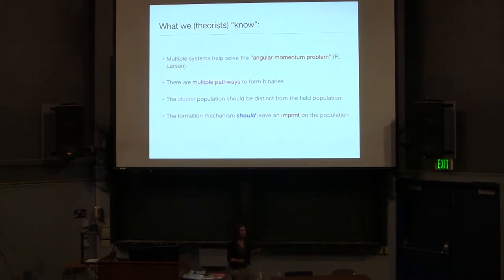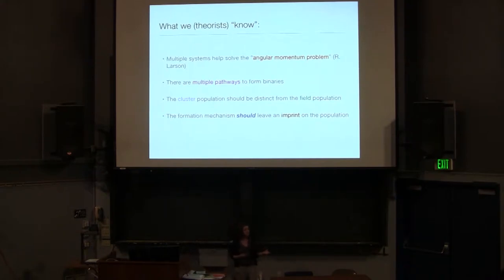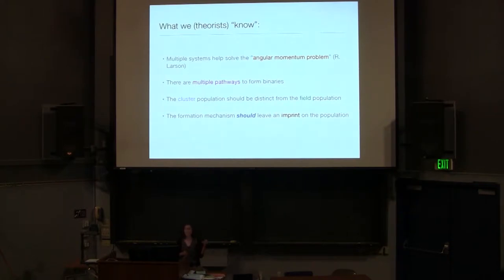There's quite a range, so it would be surprising if there was really only one way to make all those different types of binaries. We also know that the population of binaries in young star-forming regions and clusters should be distinct from the population in the field, because there is dynamical processing between these two populations. Something else we know is that the formation mechanism should leave an imprint on the population — we should be able to look at the population and infer something about how the stars formed. But because of dynamical processing, this can actually be a real challenge and something we're actively working on.